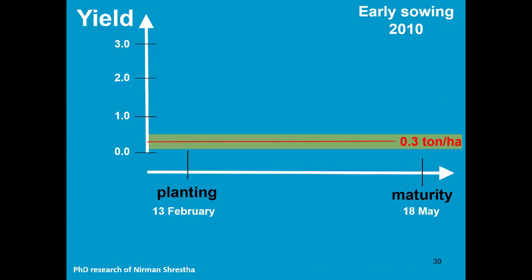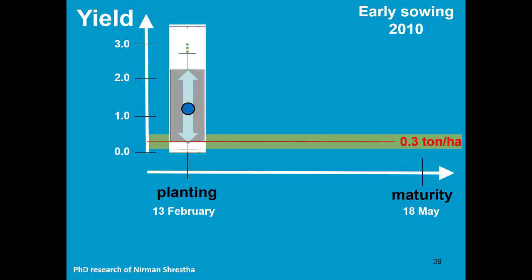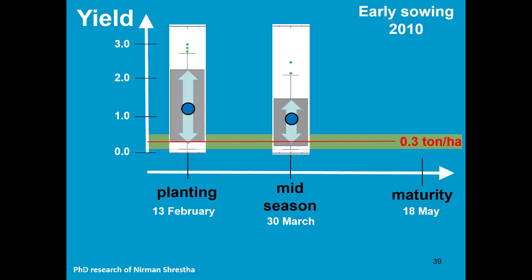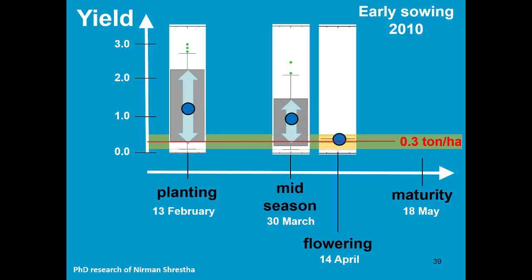Here we see the result for maize, which was early sown in 2010. The crop was planted on the 13th of February and reached maturity on the 18th of May. The observed yield was very low — 0.3 tonne per hectare. By running AquaCrop to forecast the yield, we observe that the predicted yield is relatively high at the moment of planting. When the season progresses, the predictions are heading to 0.3 tonne, and at mid-flowering, the yield forecast was already in the range of the observed yield.